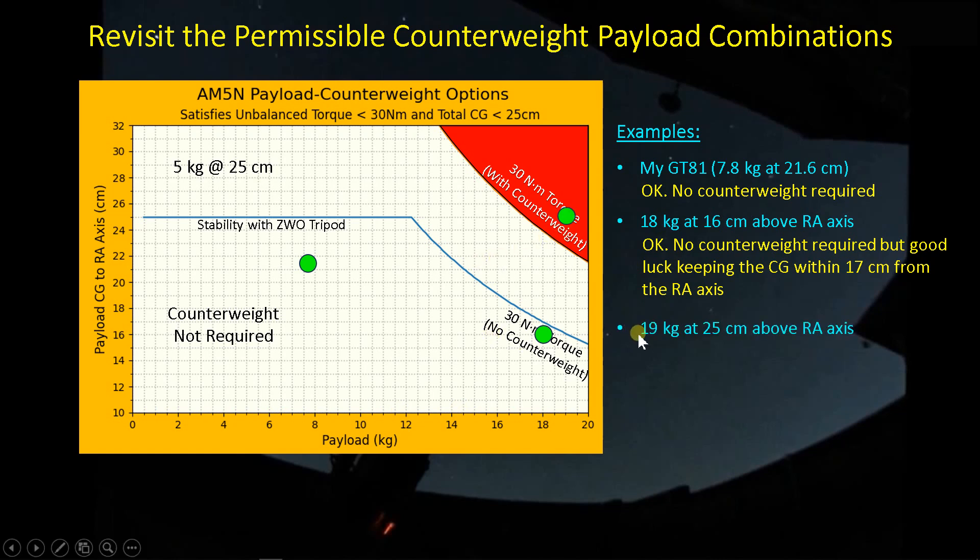Now, finally, a more realistic scenario, we have a 19 kilogram payload, but it's up at 25 centimeters above the RA axis, which puts us outside this 30 newton meter torque limit with the counterweight. Now we've got to do something. And there are several options at our disposal here. One is if we're going to be using the AM5, we better use that counterweight. And then we have two options. We can lower the payload center of gravity until it hits this line here. So at about 22.5 centimeters. The second option is to find some way to reduce the weight of our payload and kind of move this green circle out until it hits the line over here. So that's taking off about two kilograms of weight and keeping it at the same height or some combination of the two. You just want to get down to this line and that's when you can safely pair your payload with the AM5N.